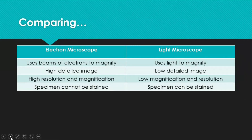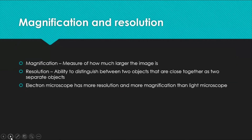Now, the differences between electron microscope and light microscope. An electron microscope uses electron beams to magnify specimens, whereas a light microscope uses light. An electron microscope produces a very high-detailed image; a light microscope produces a lower-detailed image. Electron microscopes have high resolution and high magnification; light microscopes have low magnification and low resolution. In an electron microscope the specimen cannot be stained, while in a light microscope it can be stained.